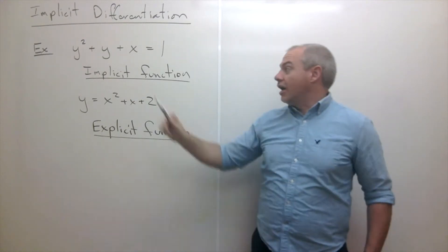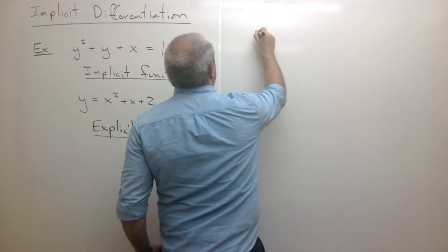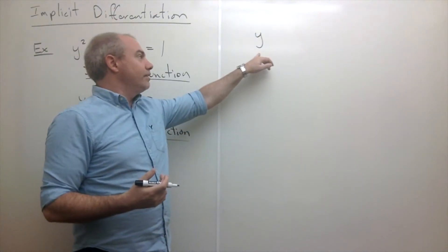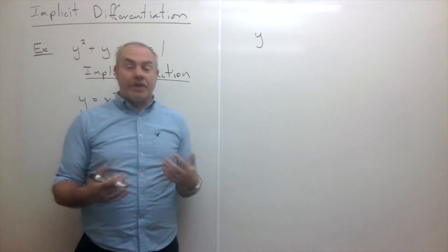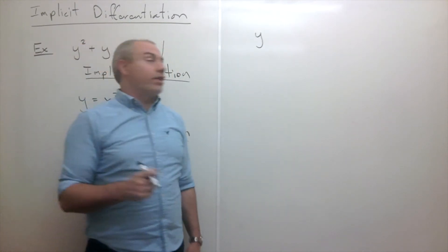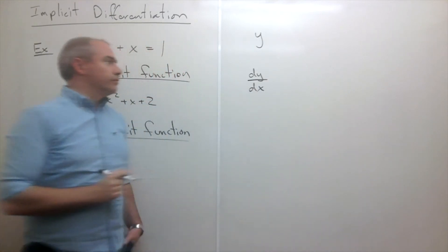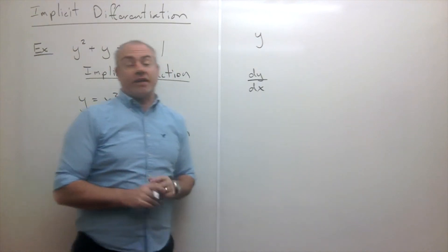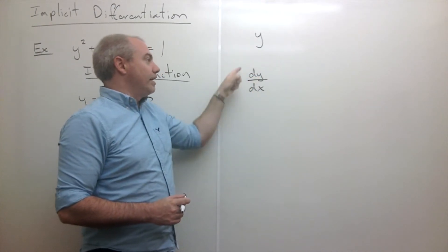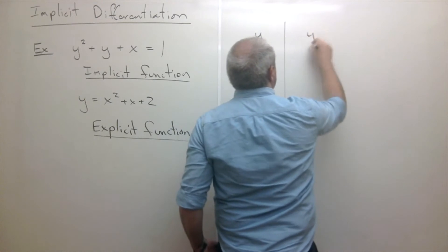Before I get into how to take the derivative of an implicit function, let's go back to the basics. If I have a function y, how do I write y's derivative? One way is y prime, but for implicit differentiation I want to write it as dy over dx. This says the derivative of y with respect to x.